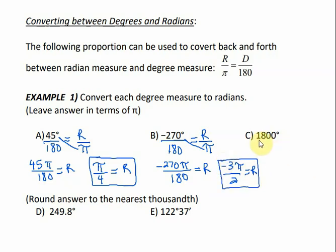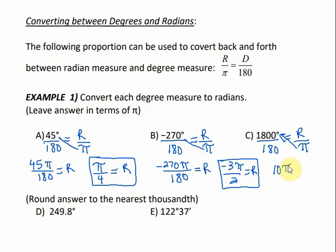For this one, 1,800 divided by 180, multiplied by pi — 1,800 divided by 180 is 10 — so that's just 10pi equals R. That's what our answers look like when we leave it in terms of pi.